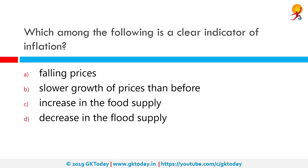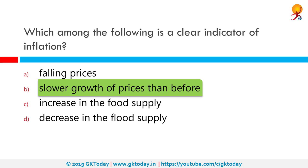Which among the following is a clear indicator of inflation? The correct answer is slower growth of prices than before. Inflation refers to the sustained increase in prices of goods and services from year to year, resulting in the decline in purchasing power of a country's currency.